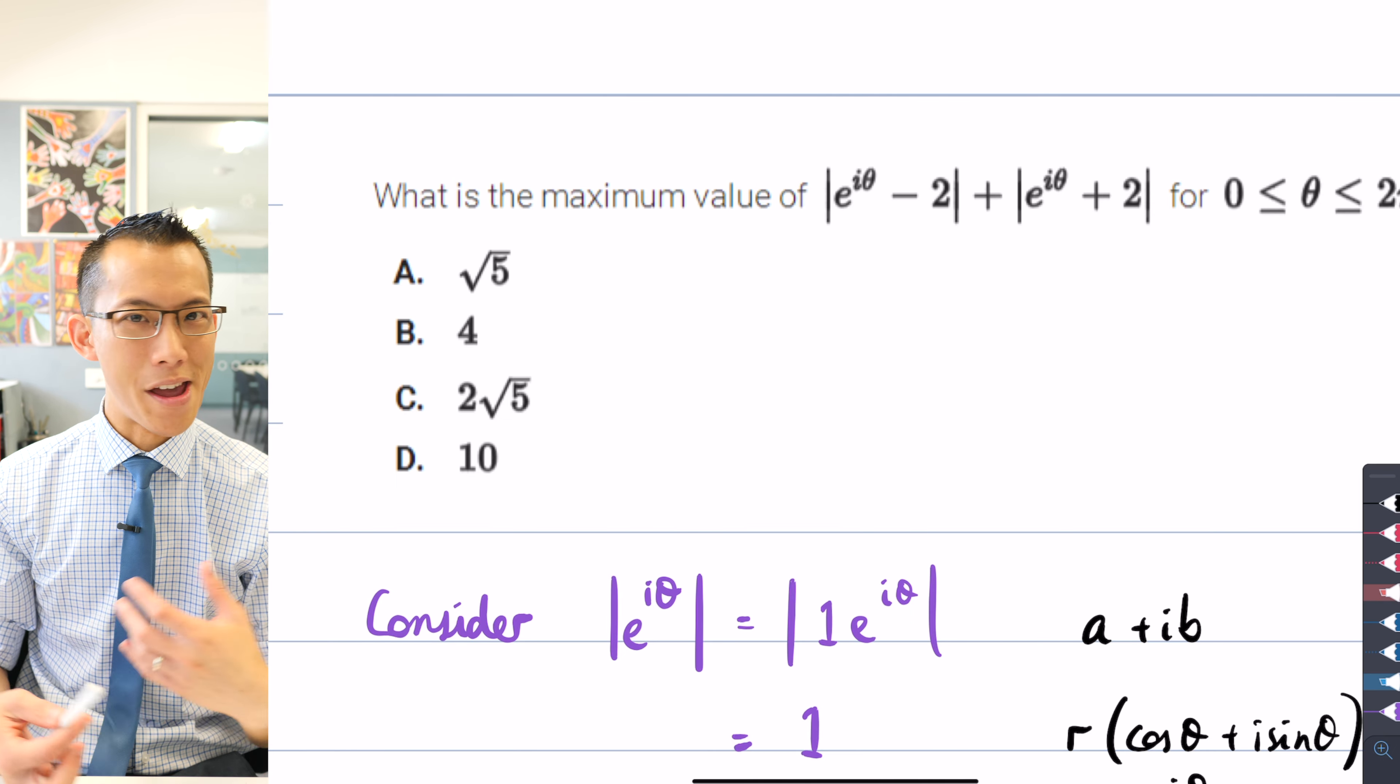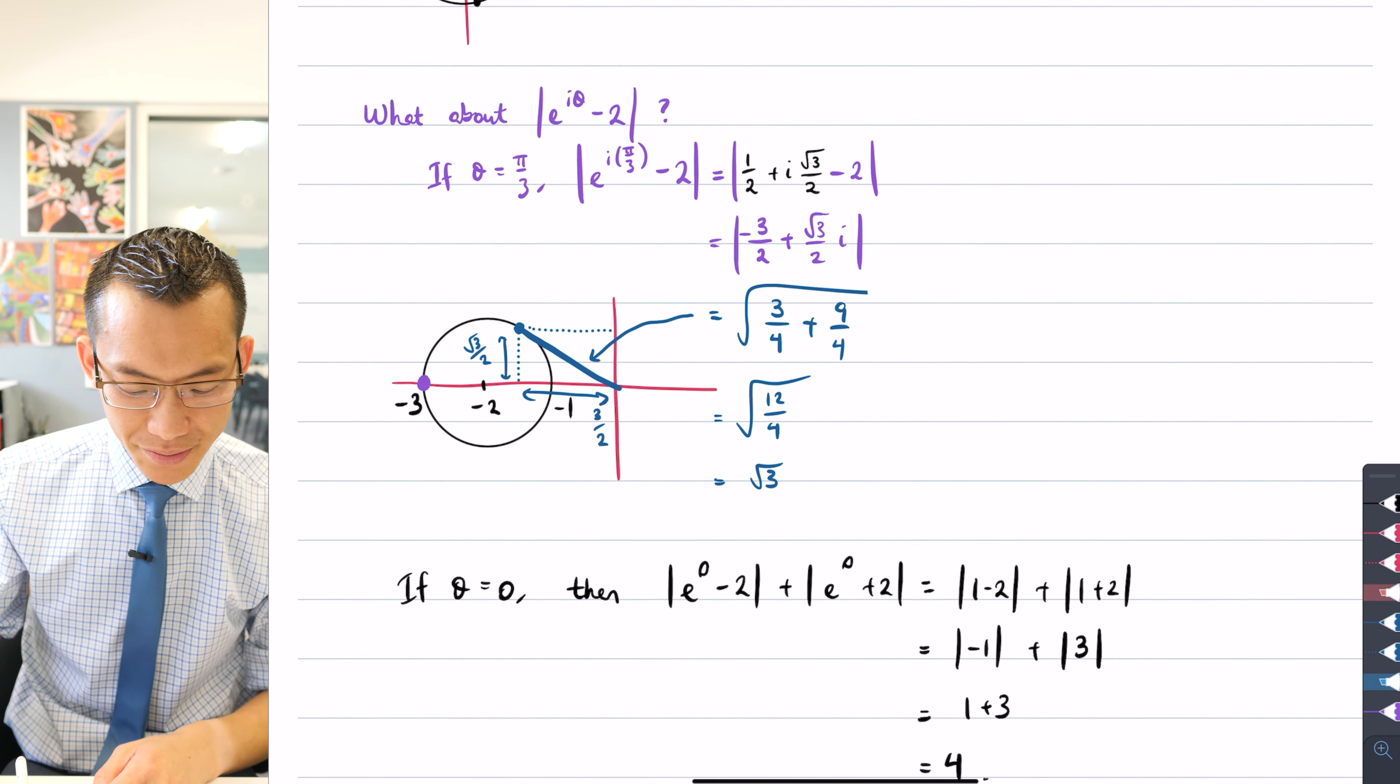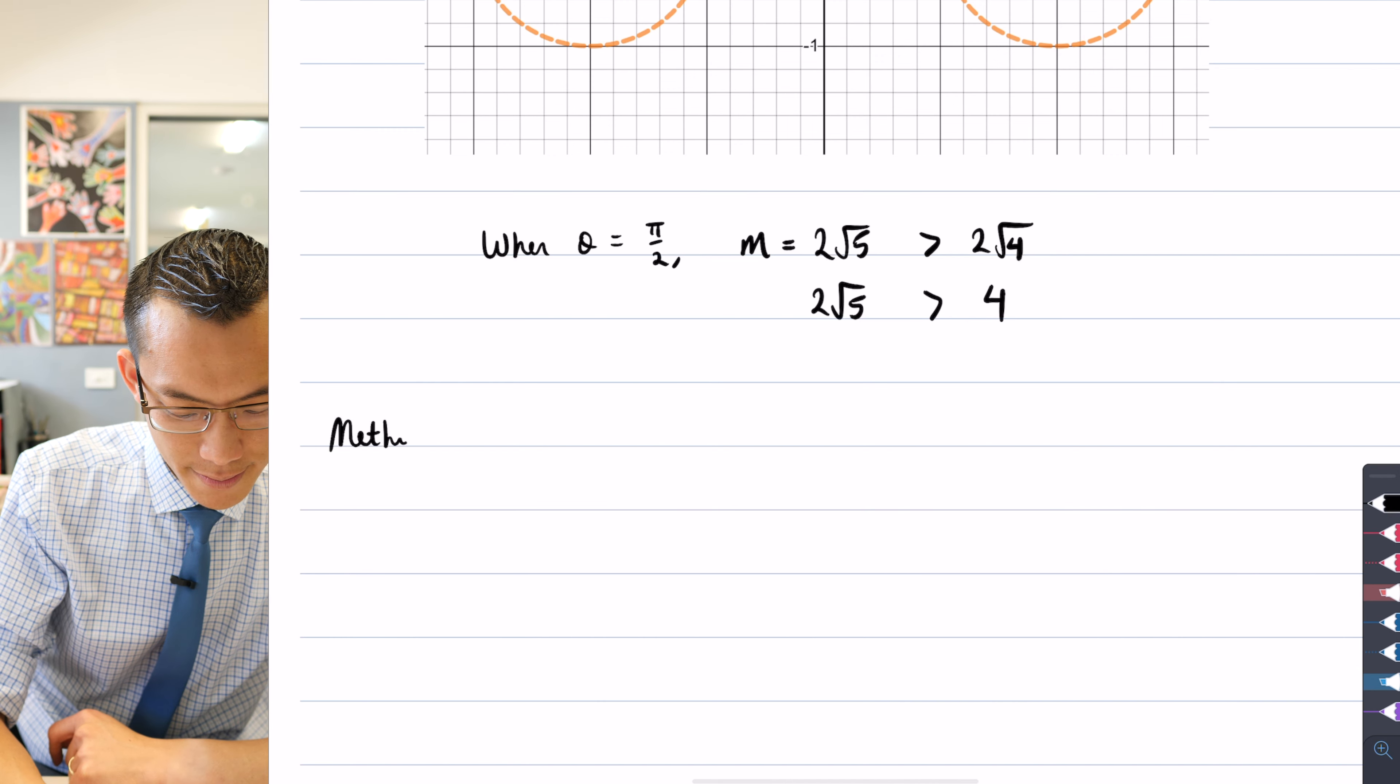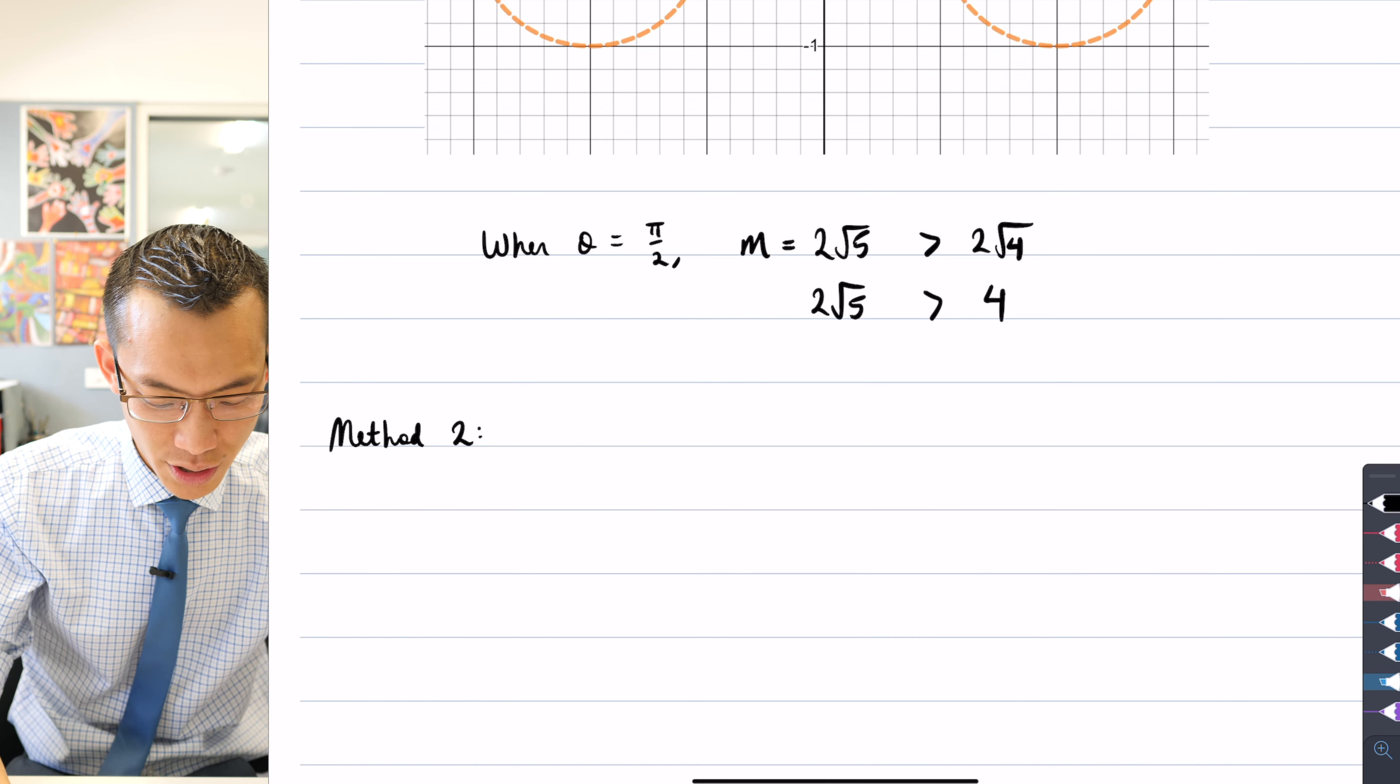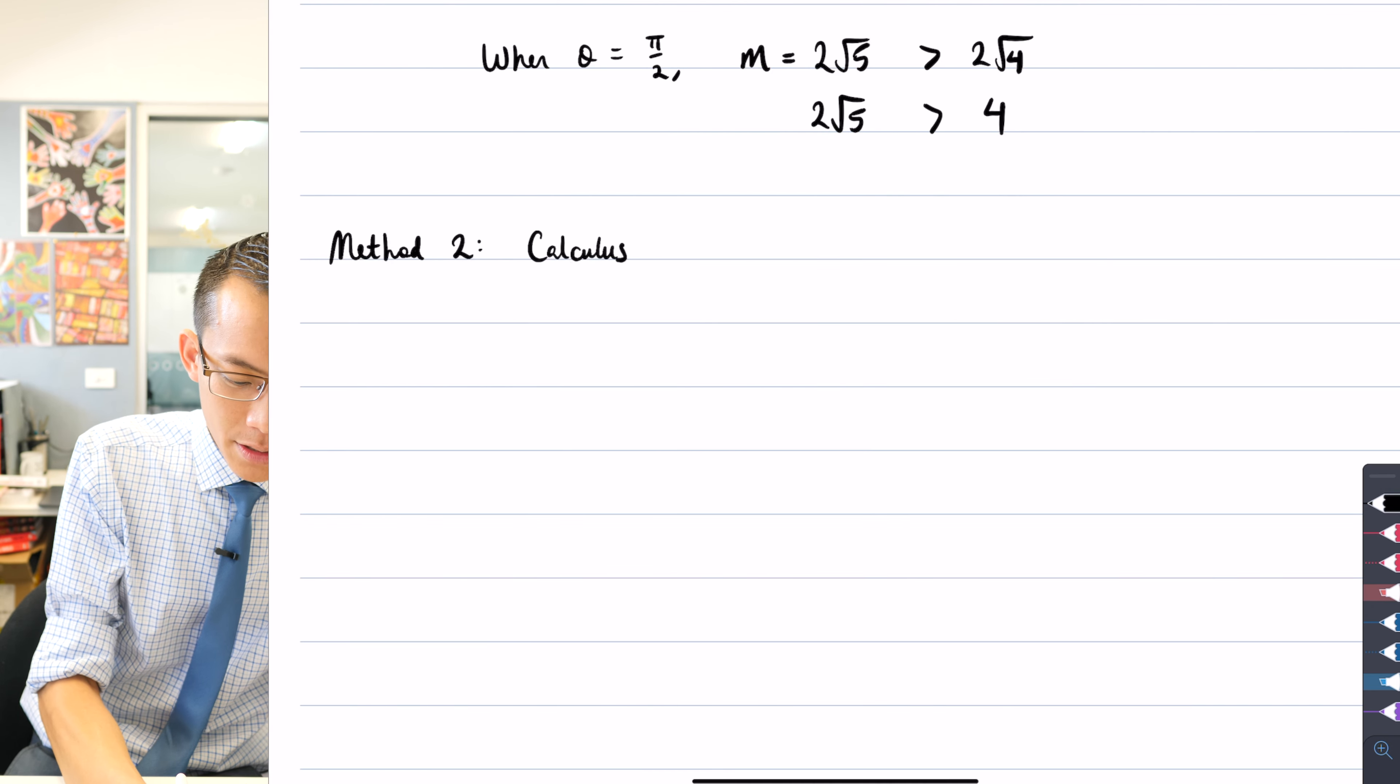So how would you go about trying to arrive at a derivative for this so that you could then actually work out where like stationary points and turning points are? Well, let's have a think about this together. What I'm going to do is I'm going to make a little heading here. I'm going to say method two. I'm going to call this calculus, right? So let's just go and name it that.